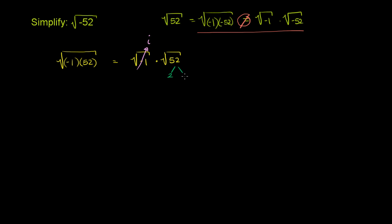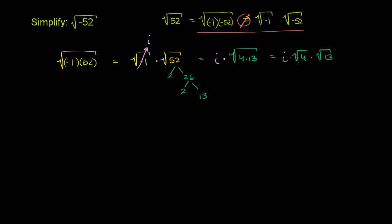So 52 is 2 times 26, and 26 is 2 times 13. So we have 2 times 2, or 4, which is a perfect square. So we can rewrite this as i times the square root of 4 times 13, which equals i times the principal square root of 4 times the principal square root of 13. The principal square root of 4 is 2, so this simplifies to i times 2 times the square root of 13.